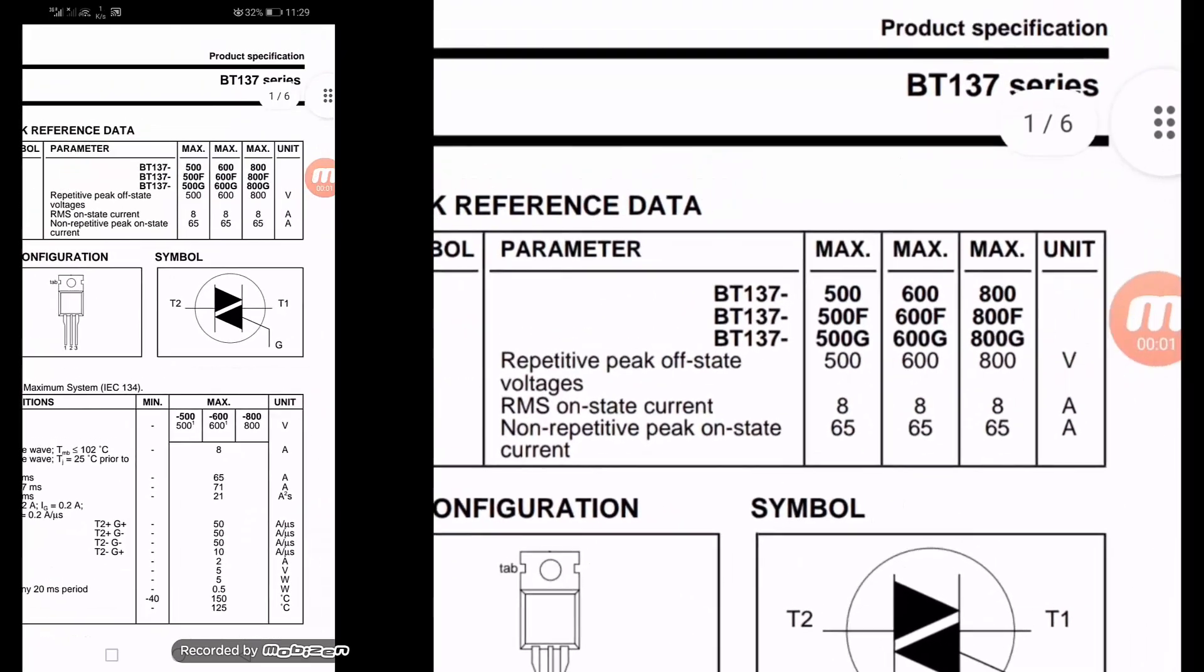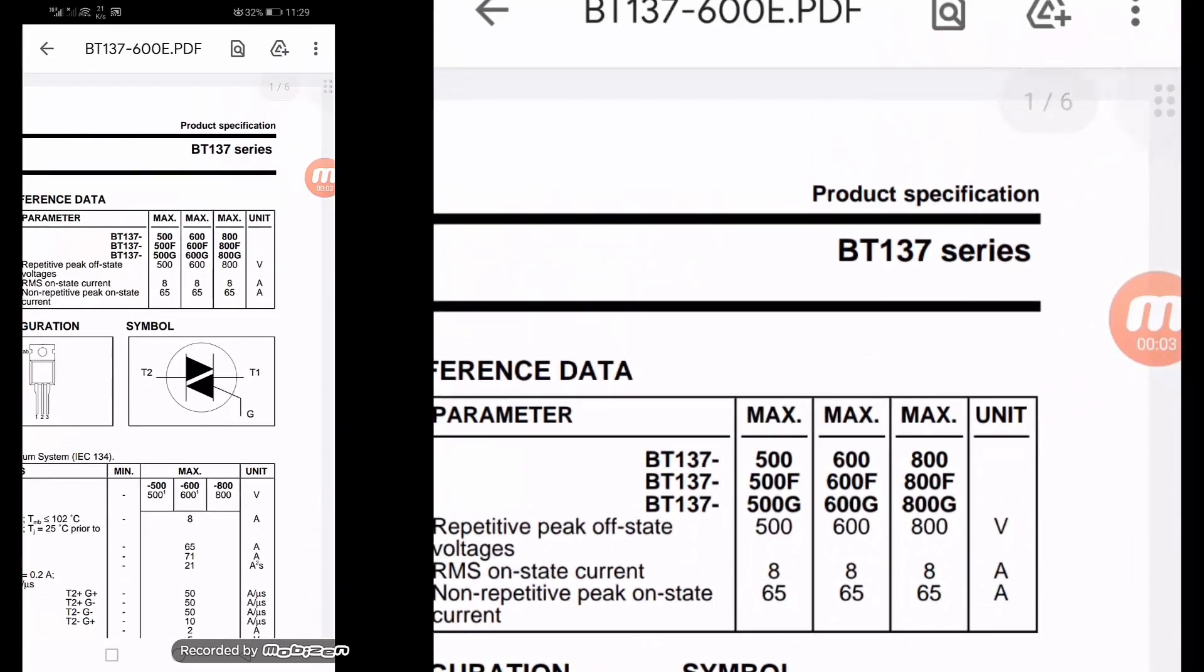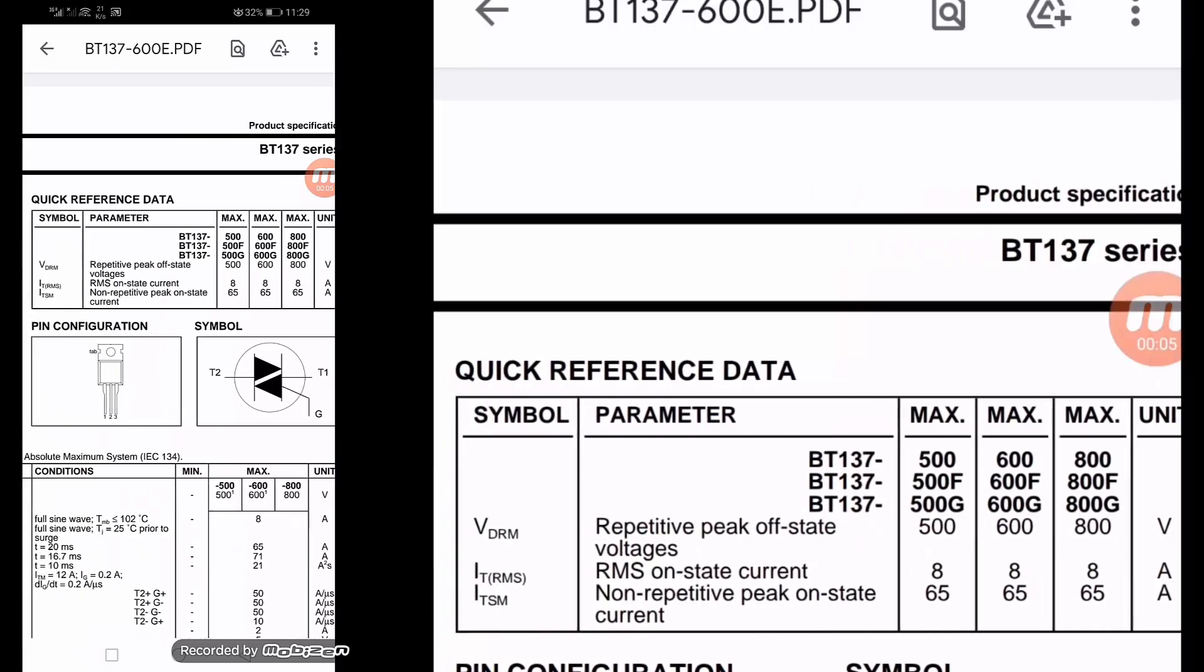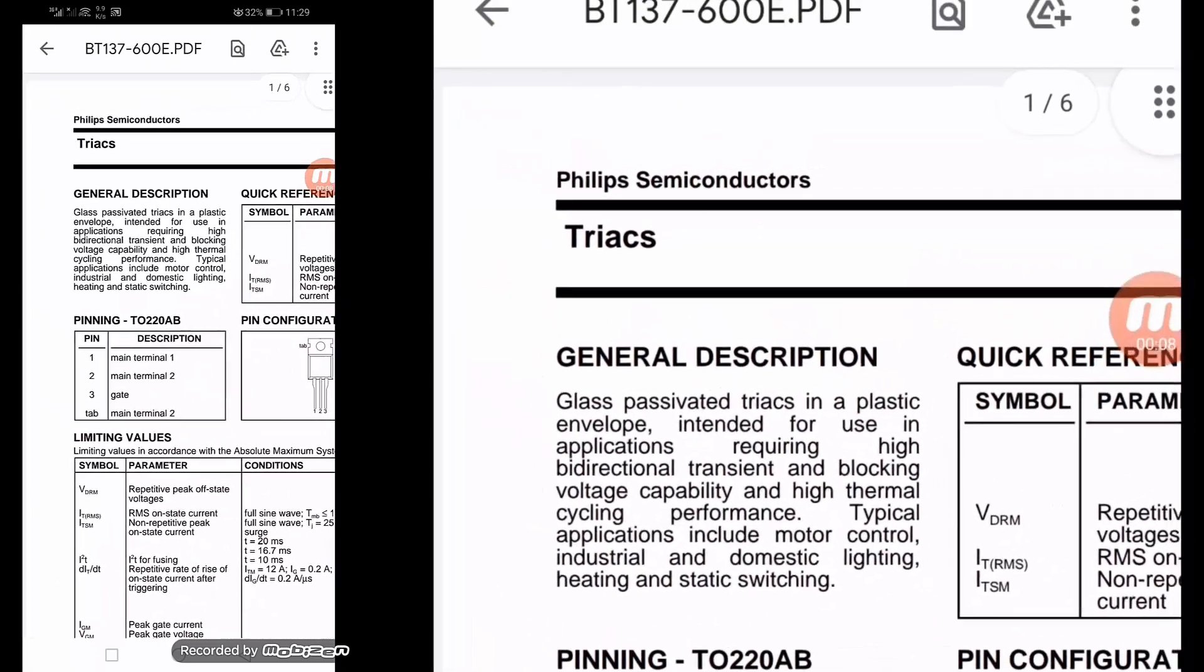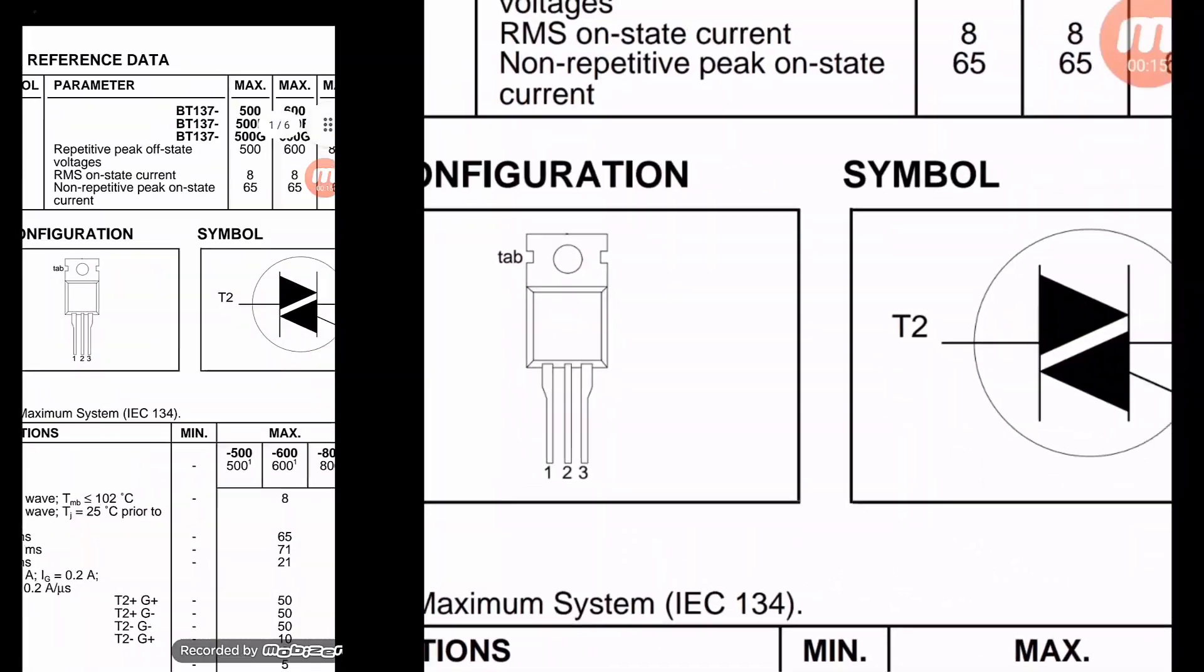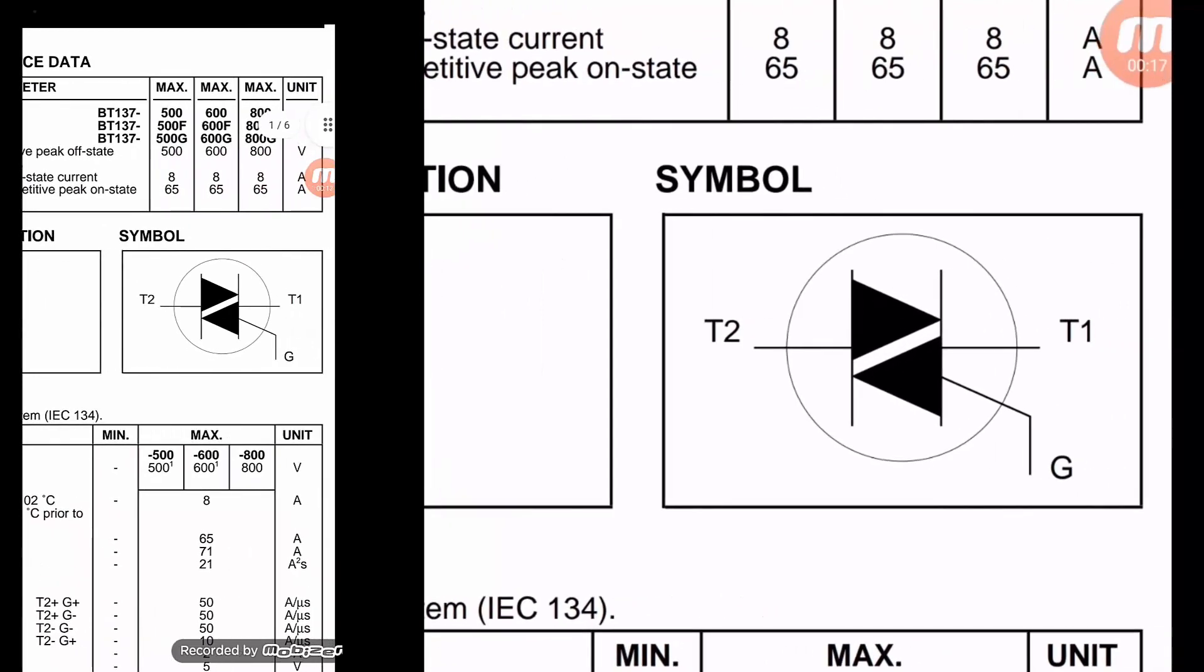Assalamu alaikum warahmatullahi wabarakatuh friends. In this video we will discuss the BT137 series triac. It is a thyristor family component with three terminals. Its terminal identification is T2, T1, and gate.